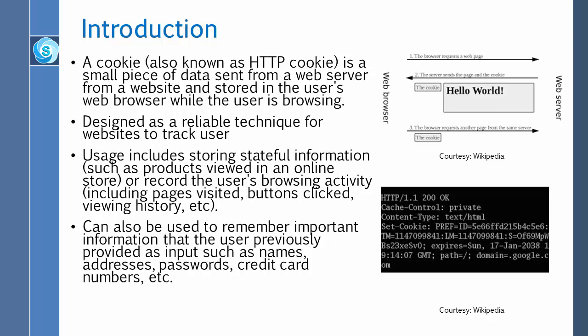So what exactly is a cookie? A cookie, also known as an HTTP cookie, is a small piece of data sent from a web server and stored in the user's web browser while the user is browsing. It is designed as a reliable technique for websites to track users. Its usage includes storing stateful information such as products viewed in an online store, or recording the user's browsing activity including pages visited, buttons clicked, viewing history, etc.